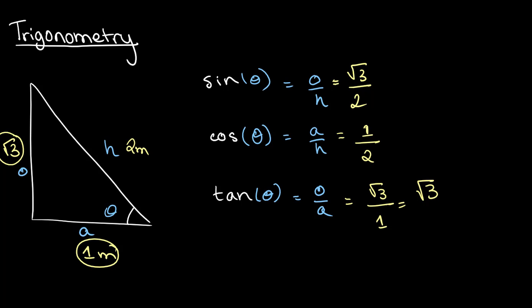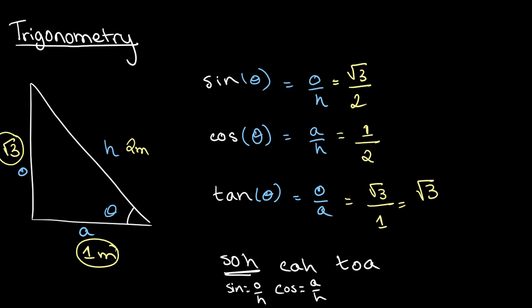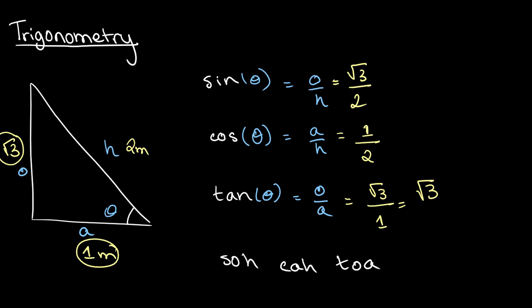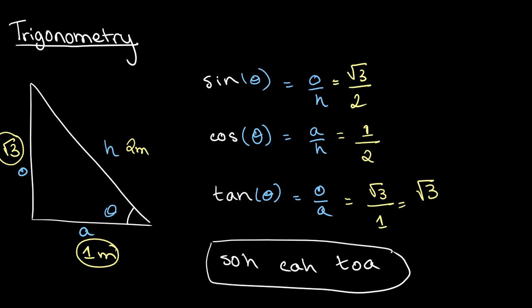This can be a lot to remember — sine O over H, cosine A over H, tan O over A. The way to remember this is the simple mnemonic SOH-CAH-TOA. SOH means sine equals O over H, CAH means cosine equals A over H, and TOA means tangent equals O over A. SOH-CAH-TOA is something you should remember, as it makes life much easier when recalling all the identities of sine, cosine, and tangent.